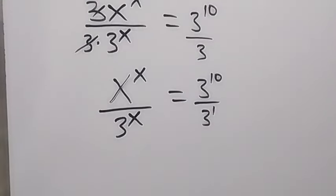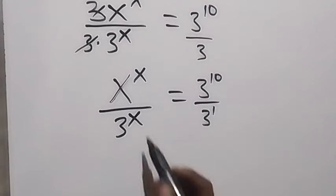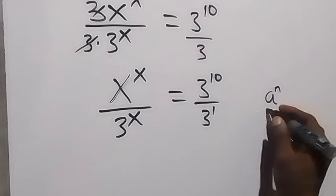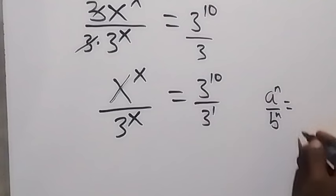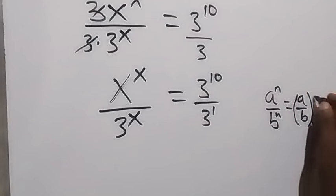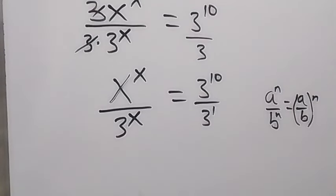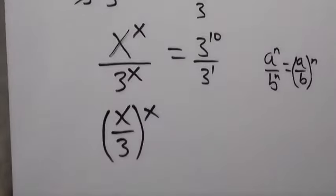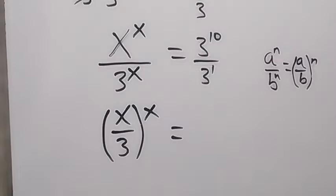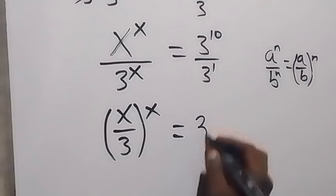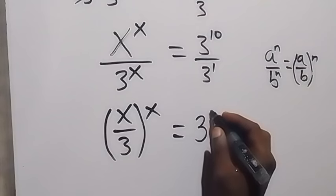3 is still 3 raised to power 1. From the law of indices, when we have a raised to power n over b raised to power n, we can write this as (a over b) raised to power n. Applying that on the left-hand side we have (x over 3) raised to power x. On the right-hand side, same base so we subtract powers: 3 raised to power 10 minus 1, which is 3 raised to power 9.